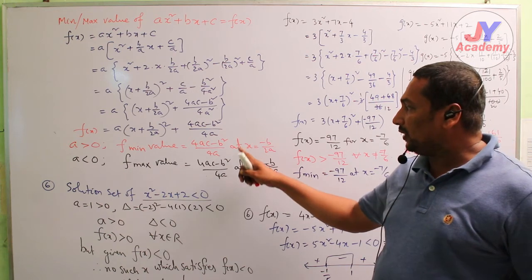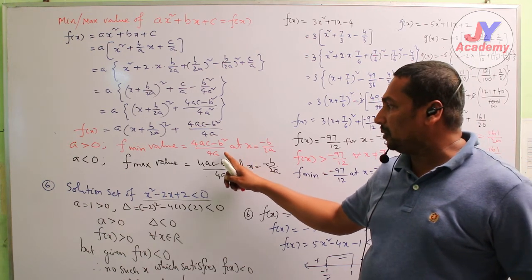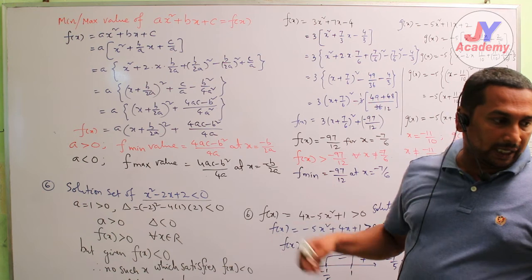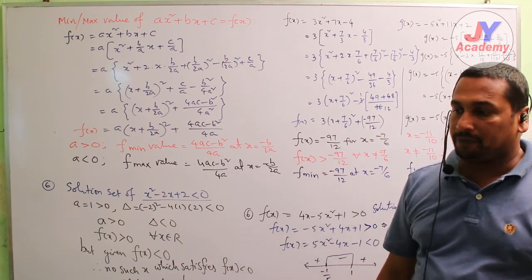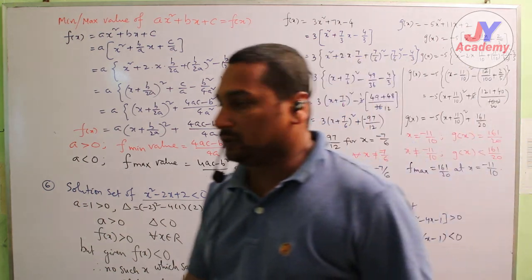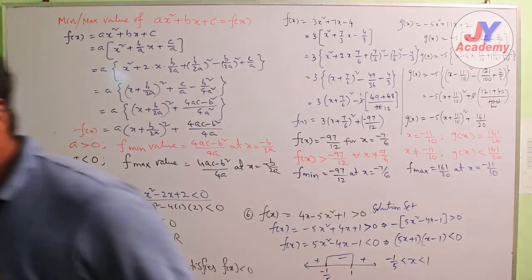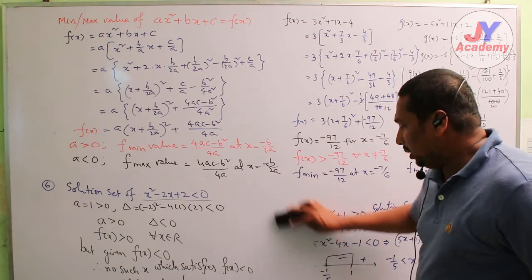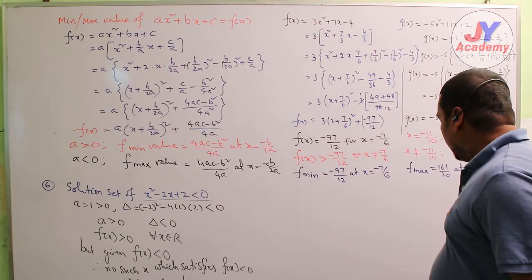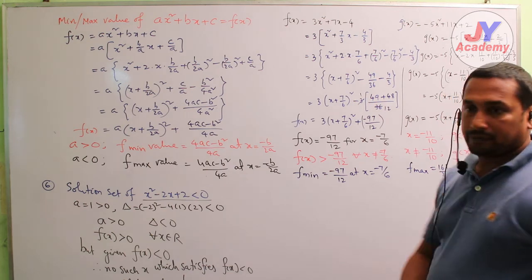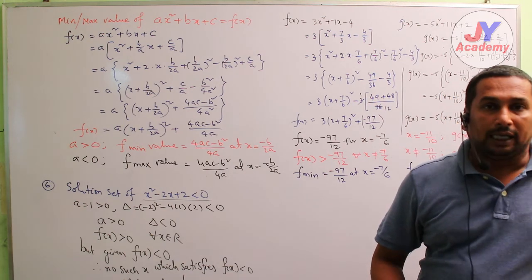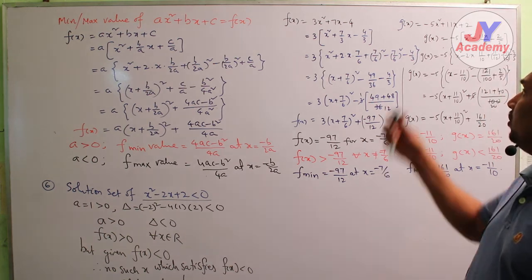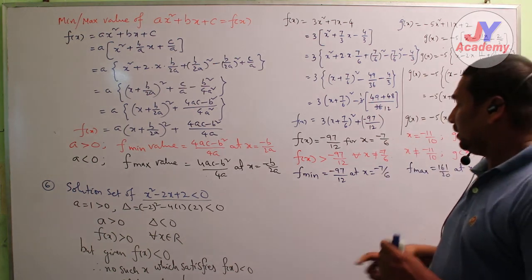At what value of x does it become minimum or maximum? x = minus b / (2a). At that x value, it is either minimum or maximum depending on the x² coefficient.